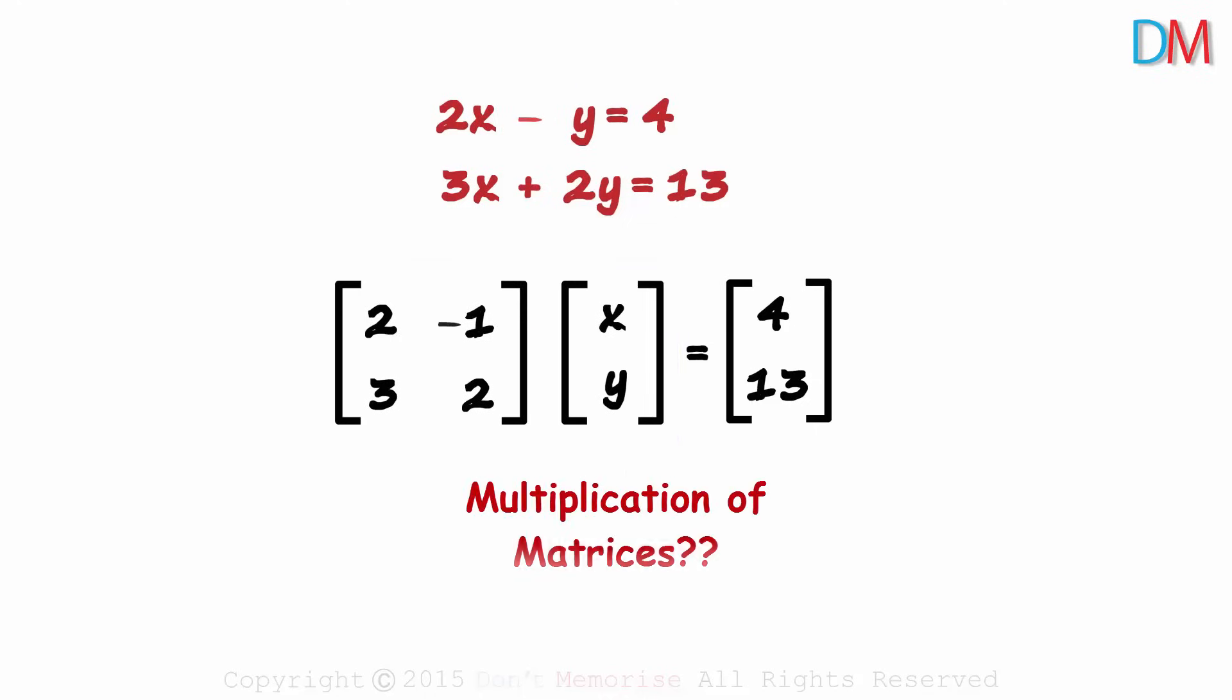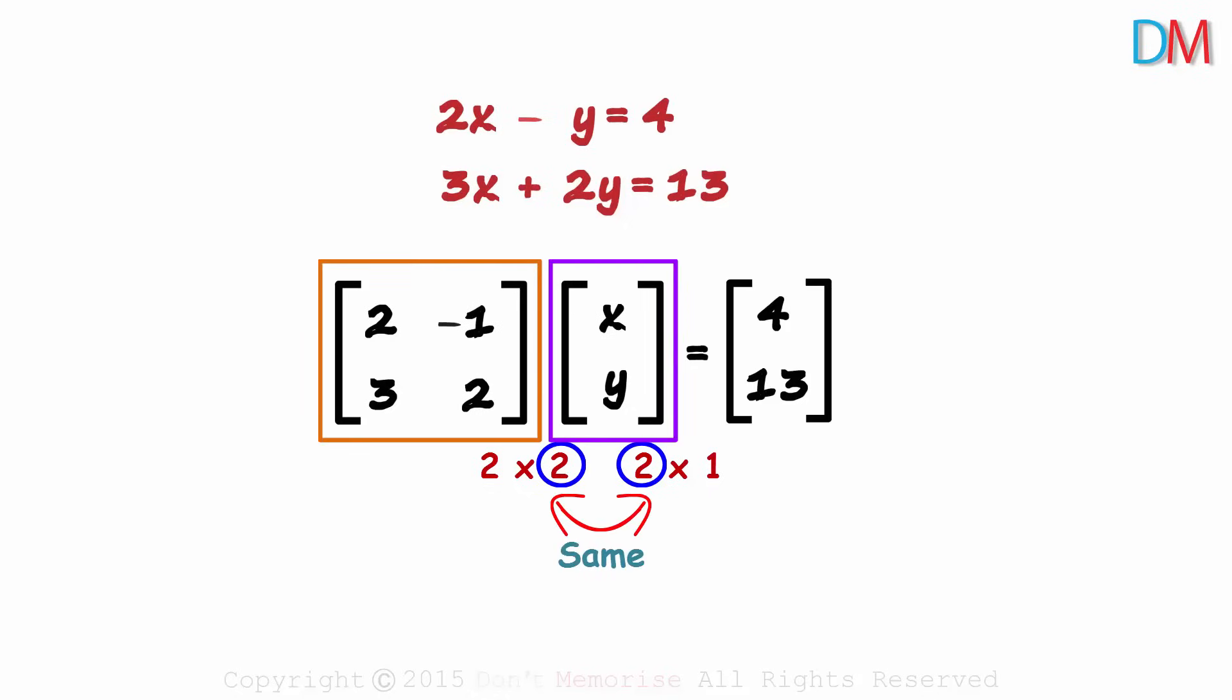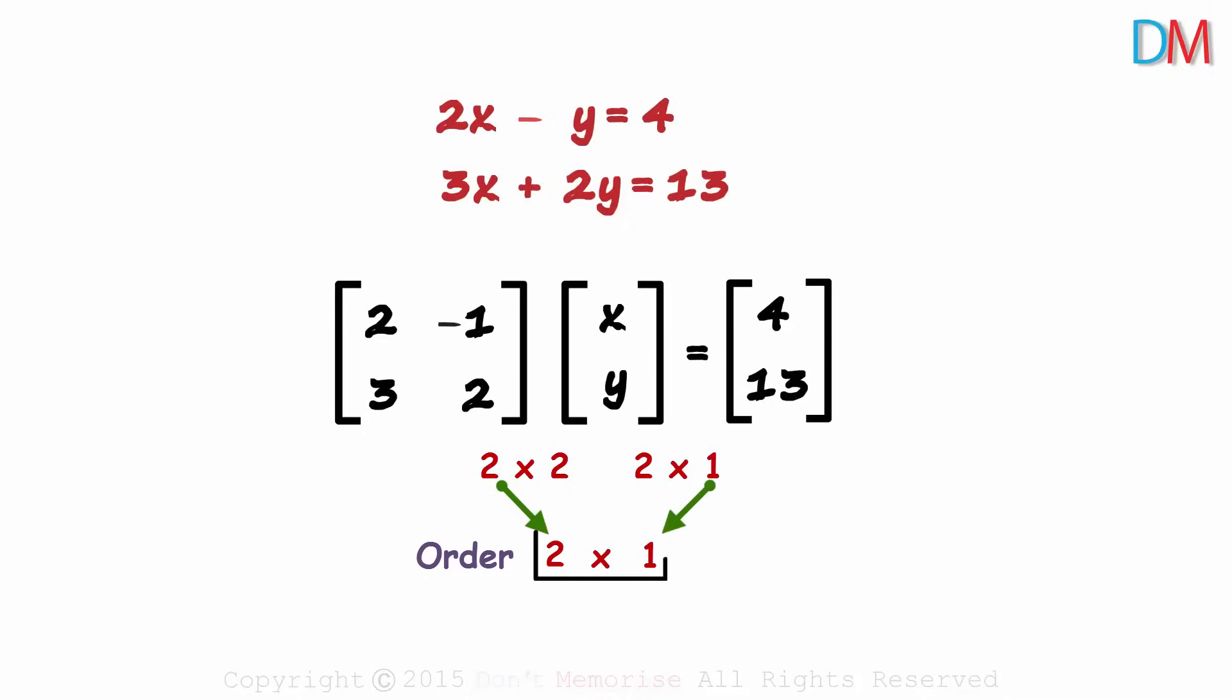Do you remember multiplication of matrices? To know if two matrices can be multiplied, we need to check their order. The order of this matrix is 2 by 2 and that of this one is 2 by 1. Two rows, two columns and two rows, one column. As the second and the third numbers are the same, these matrices are compatible for multiplication. The order of the resulting matrix will be the first number by the fourth number. It will be 2 by 1.